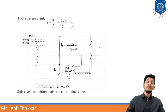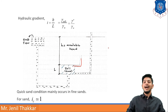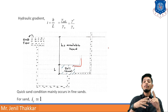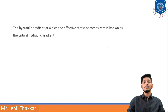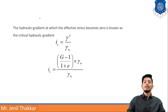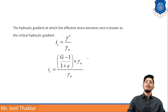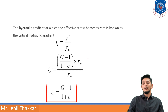Quicksand condition mainly occurs in fine sands when the critical hydraulic gradient ic is approximately equal to 1. The critical hydraulic gradient is the hydraulic gradient at which effective stress becomes zero: ic = γ'/γw. This can further be written as ic = (G - 1)/(1 + e), after cancelling γw.